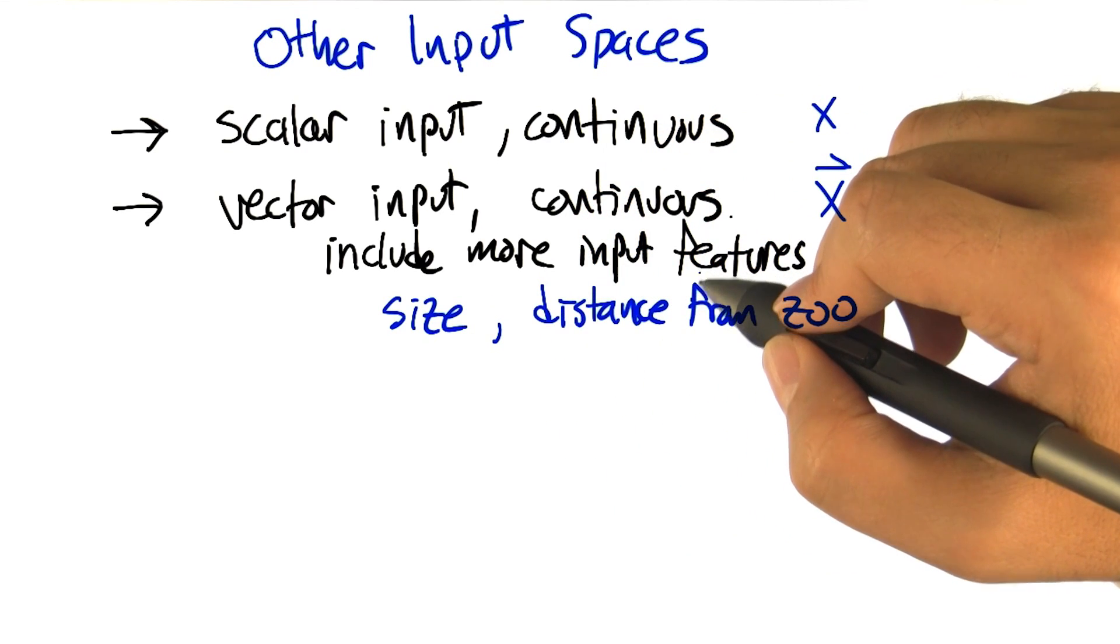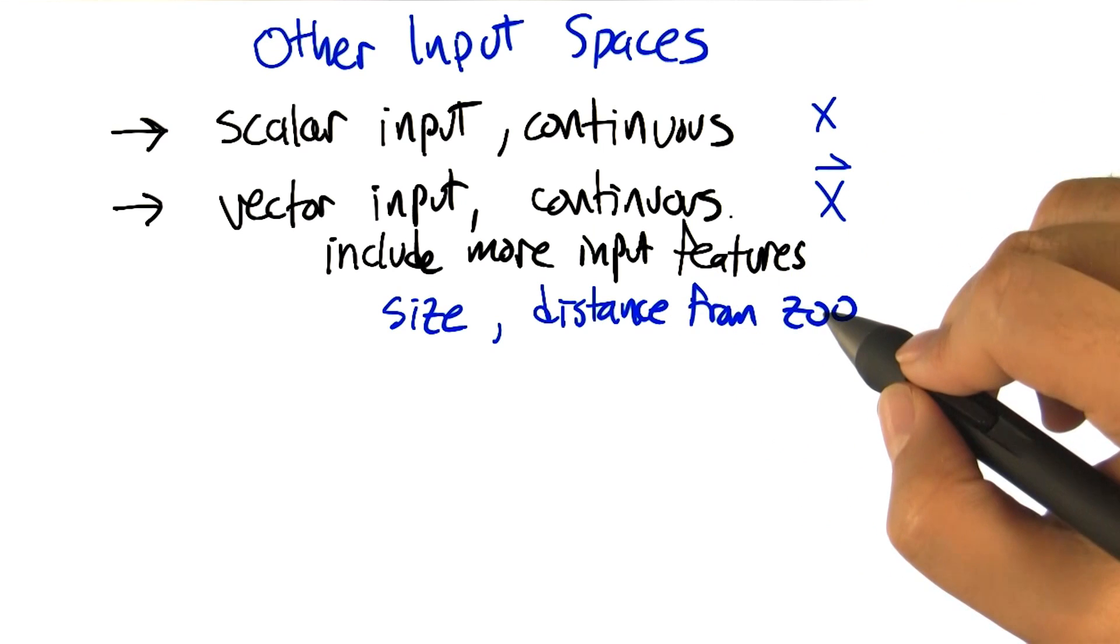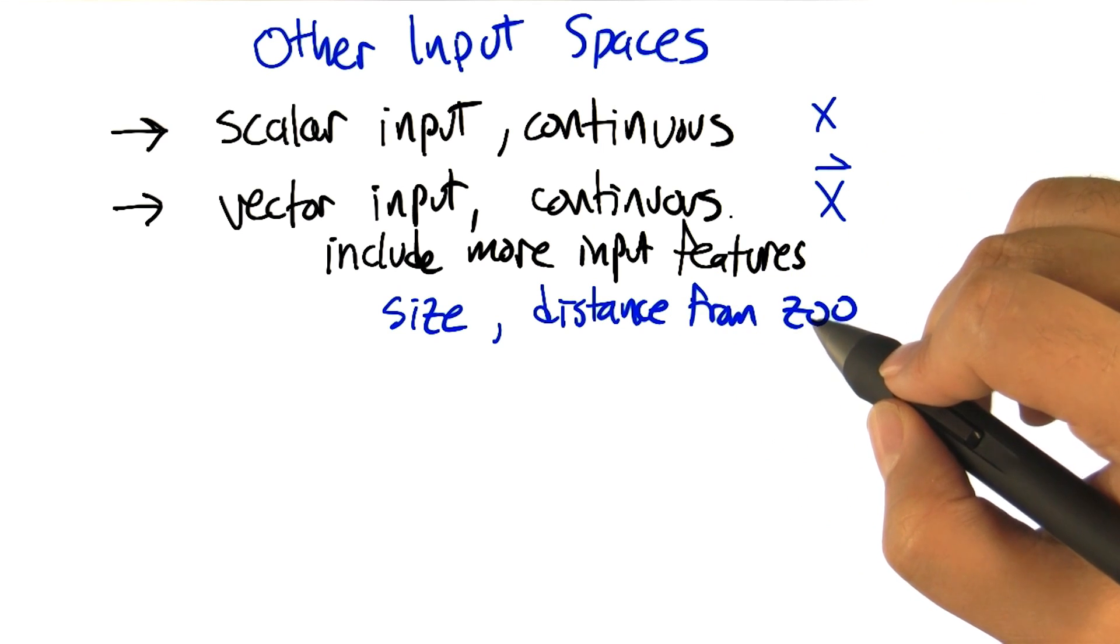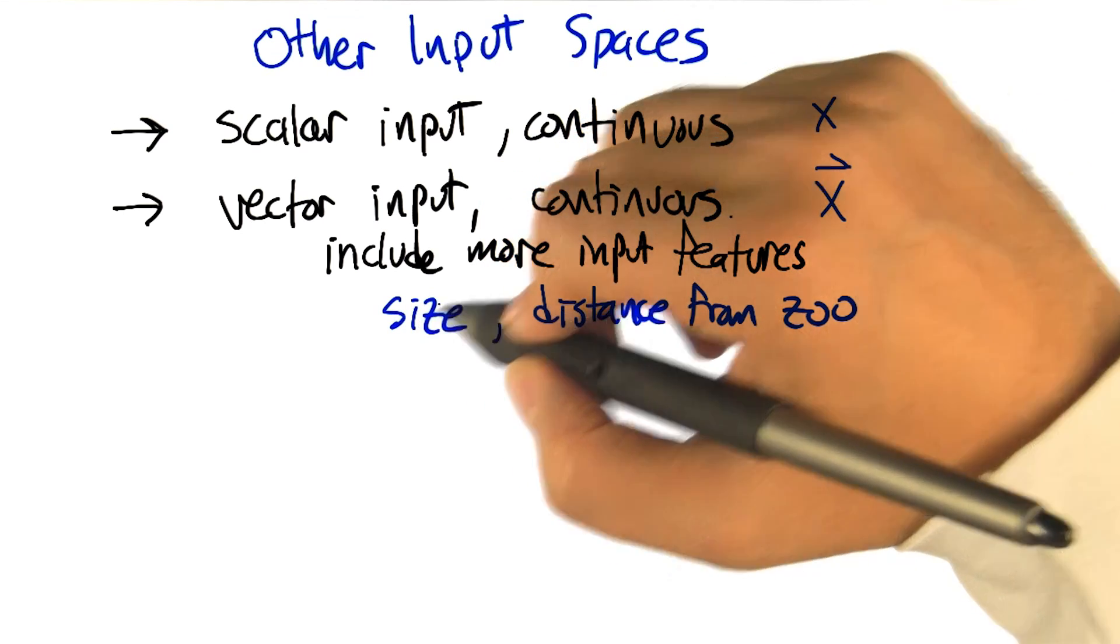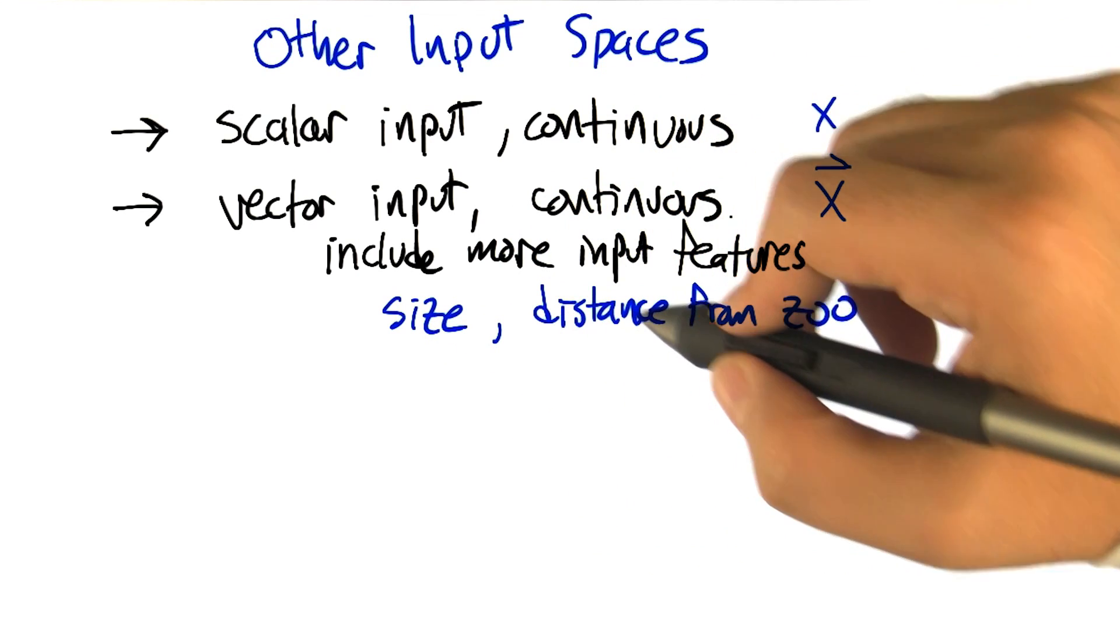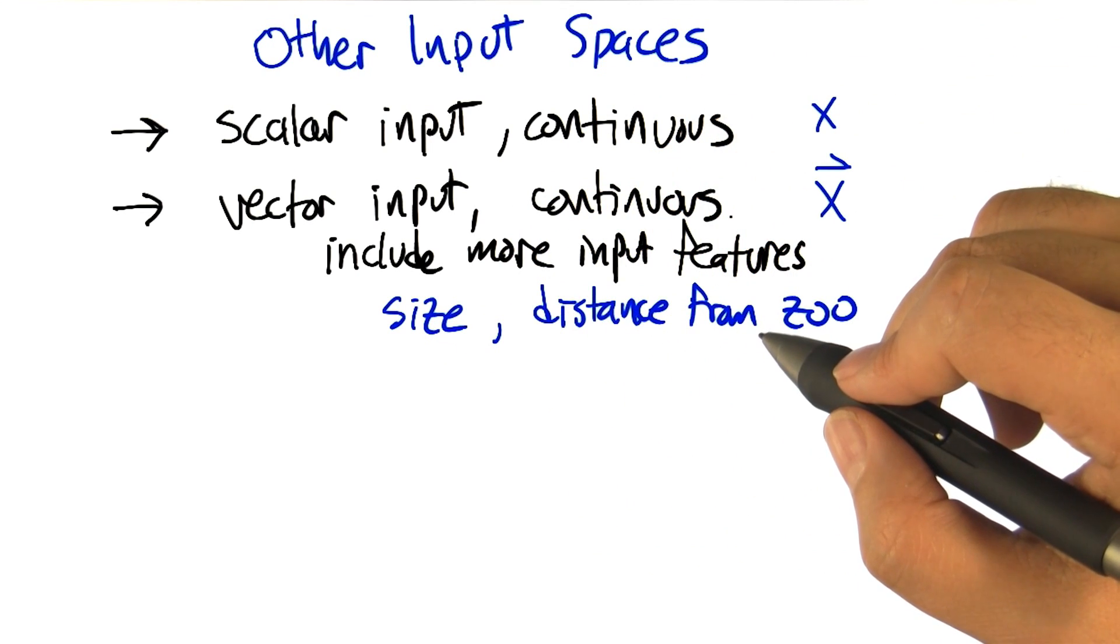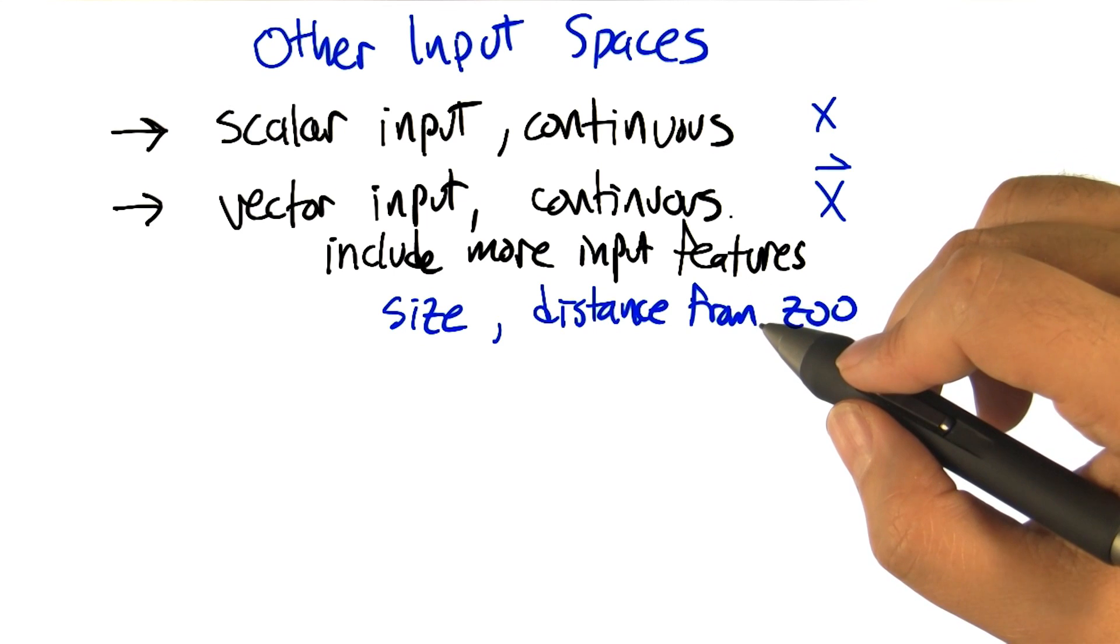Let's sort of imagine that the further away from the zoo you are, the better it is. Just like the bigger the size is, the better it is. So how do we combine these two variables into one in the context of the kinds of function classes that we've been talking about?